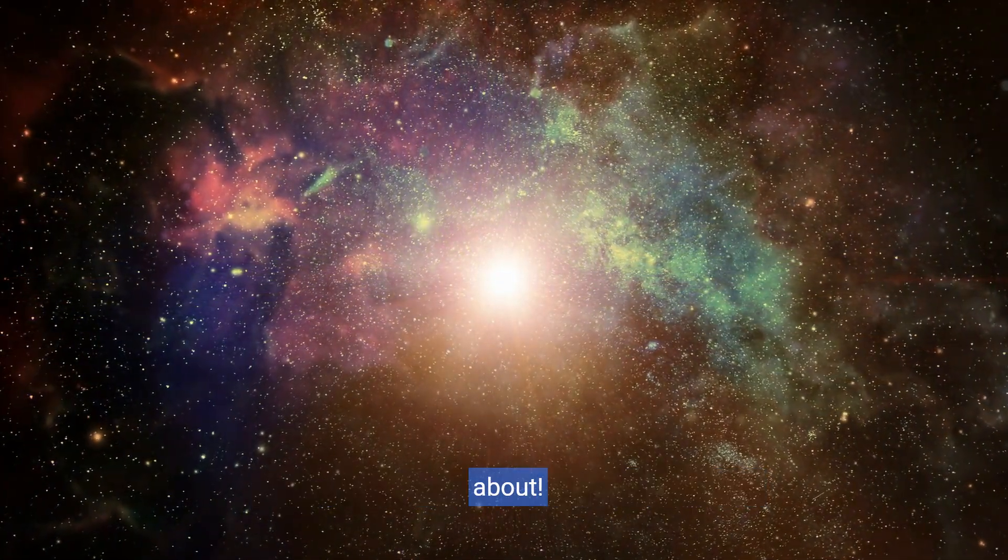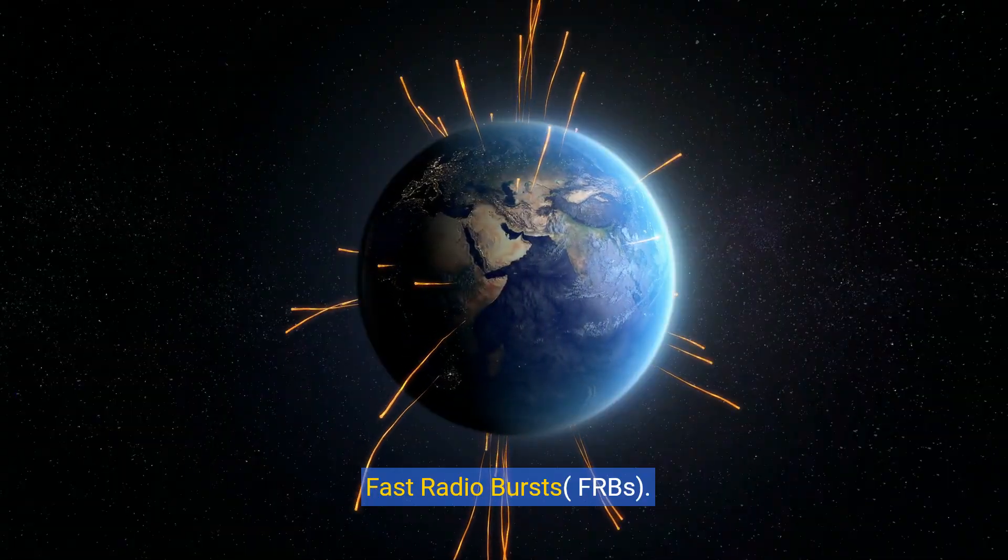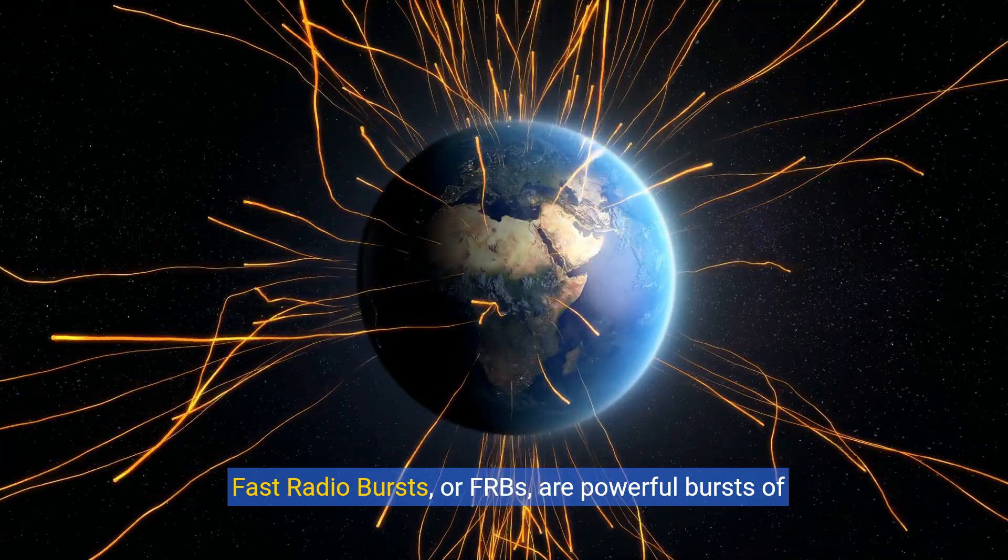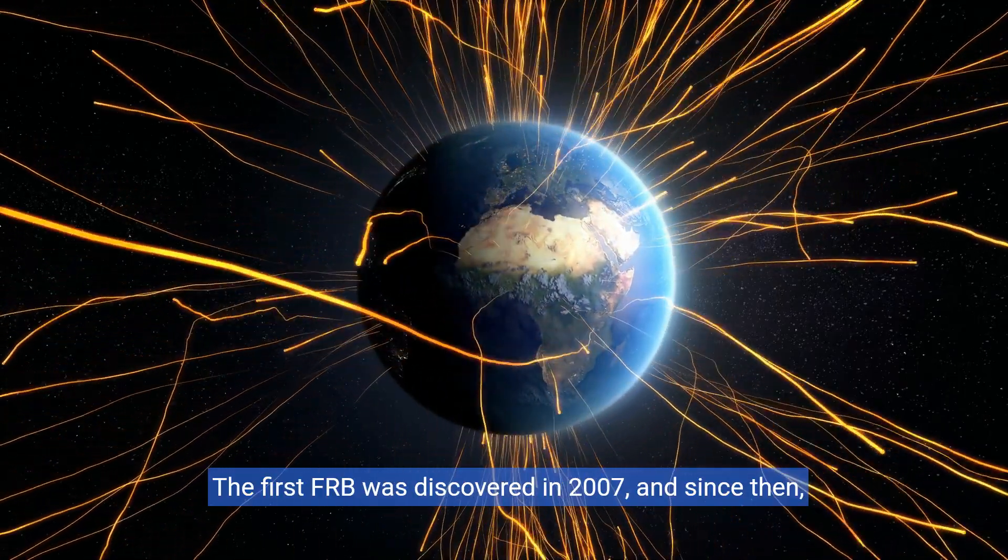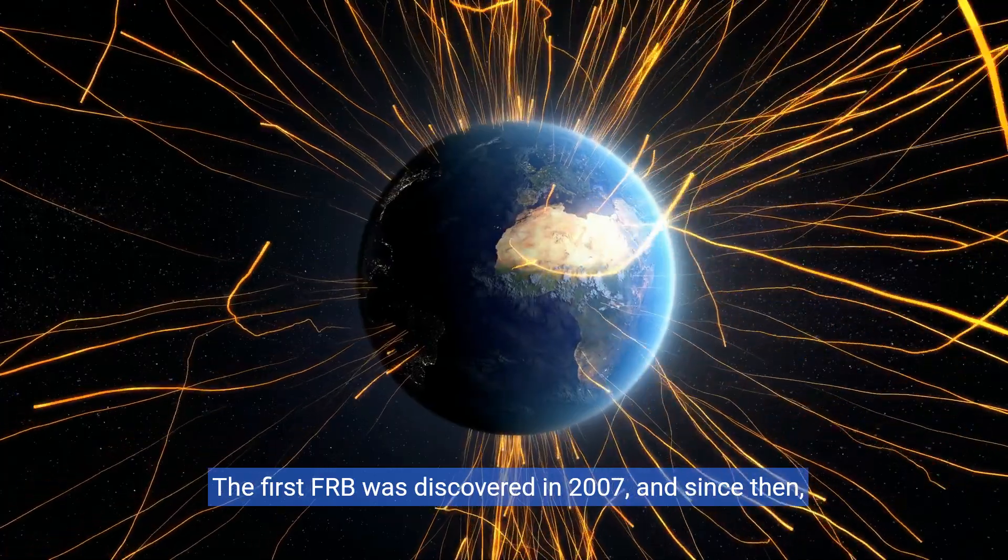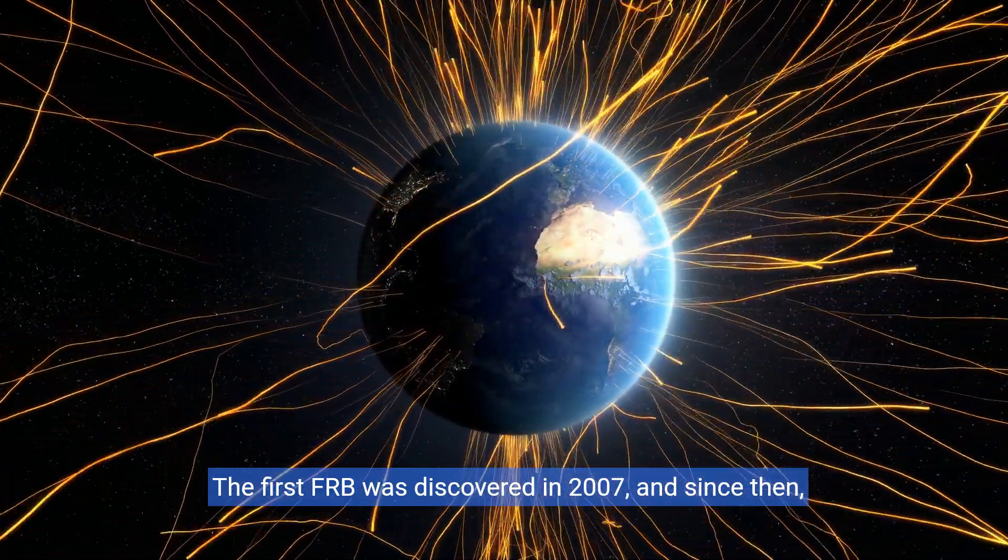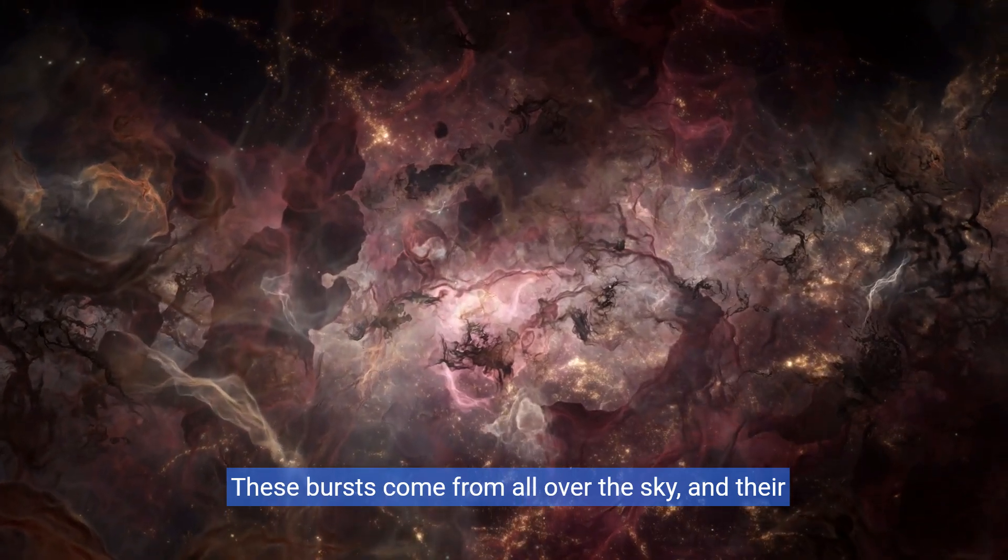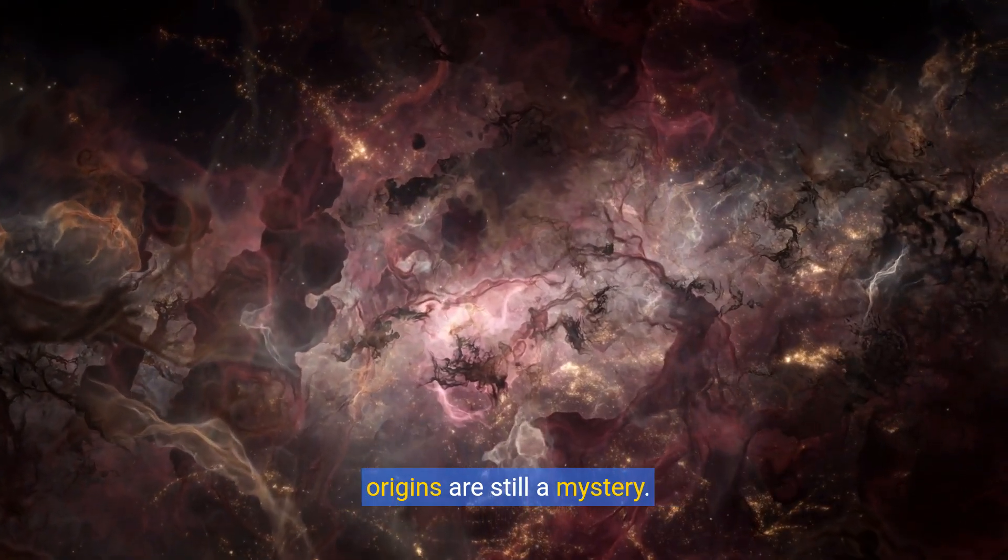Fast radio bursts, or FRBs, are powerful bursts of radio waves that last just a few milliseconds. The first FRB was discovered in 2007, and since then, hundreds more have been detected. These bursts come from all over the sky, and their origins are still a mystery.